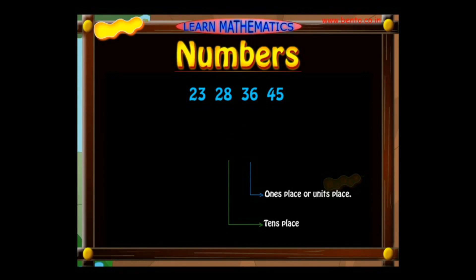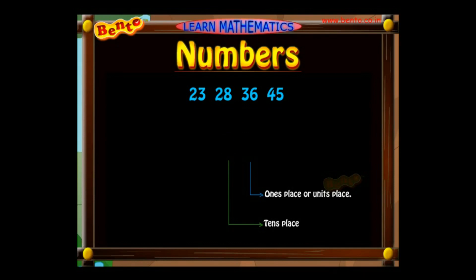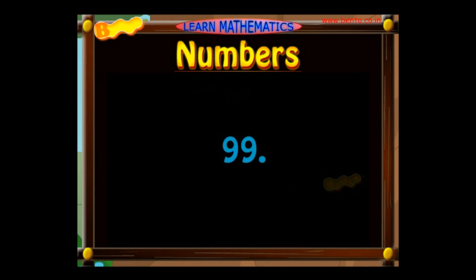The third number is read as 36 because it has a 30 and a six in it — that is three tens and six units. The fourth number is read as 45 because it has a 40 and a 5 in it — that is four tens and five units. The number next to 99 is 100, and this is the first three-digit number.